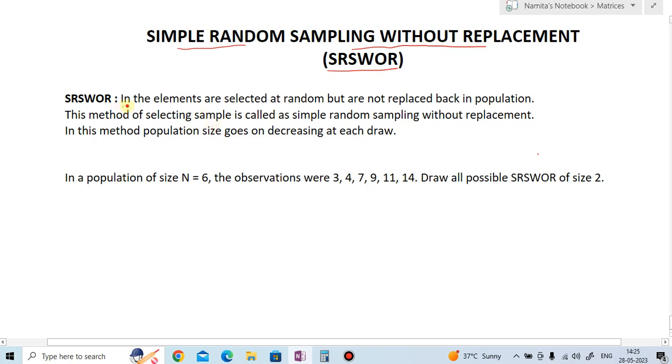It means the elements are selected at random from the population. But these elements which are selected at random are not replaced back in the population. This method of selecting sample is called as simple random sampling without replacement.